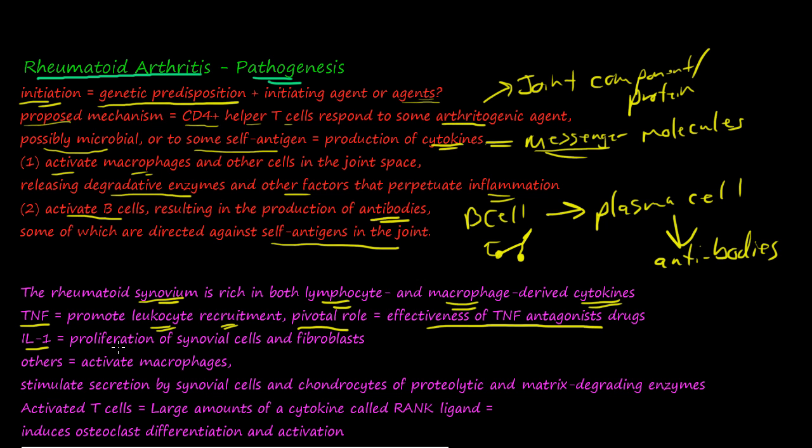Interleukin-1 - what that cytokine does is causes proliferation of synovial cells and fibroblasts. These CD4 molecules secrete interleukin-1, which is this messenger molecule that tells the synovial cells and these fibroblasts to start reproducing and splitting, undergoing replication.